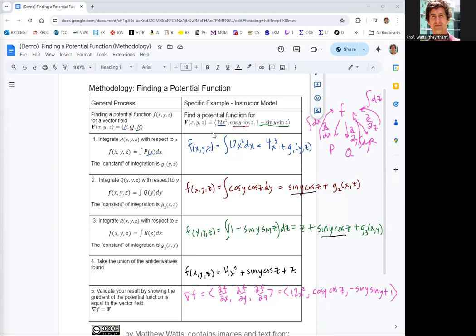And then what you want to do is you want to compare that with the original potential function and make sure that the three components all match up, which they do. You need to put the one in front on the third one, but otherwise we are good to go. All right. So we found a potential function and then validated with the gradient. We are all done with this methodology. Thank you so much for watching.